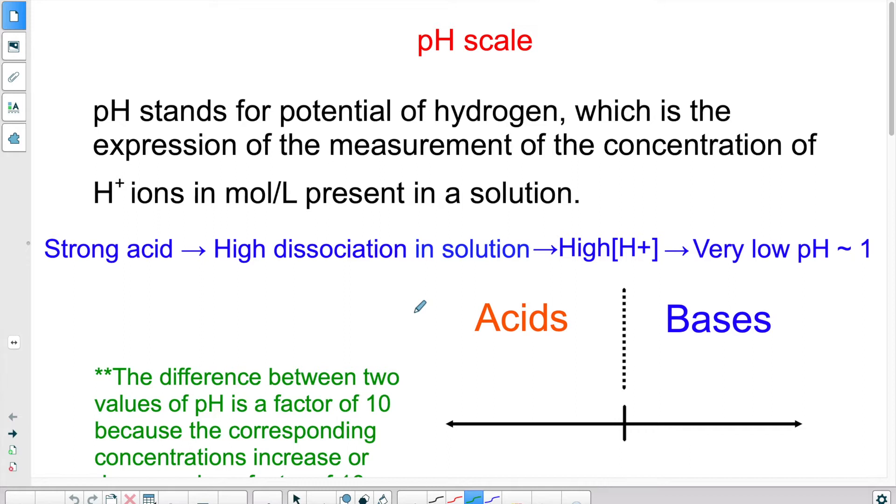So pH, what does it mean? It means potential of hydrogen. In other words, how many hydrogen ions are released by a substance when it dissolves and dissociates in water? You're going to say, but okay, but only acids dissociate and release hydrogen, not bases.